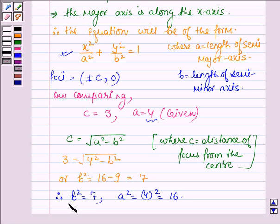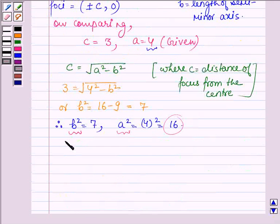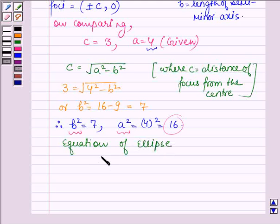Now let us substitute b² = 7 and a² = 16 in the standard equation to get the equation of the ellipse. Therefore, the equation of ellipse is given by x²/16 + y²/7 = 1.